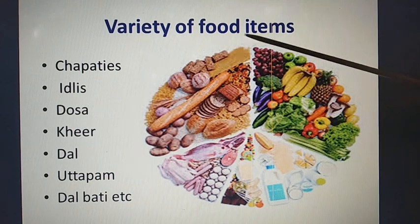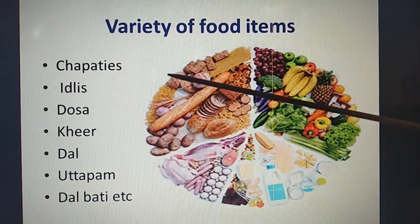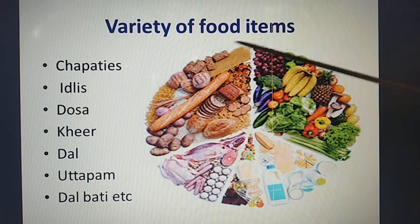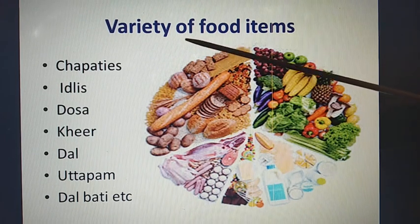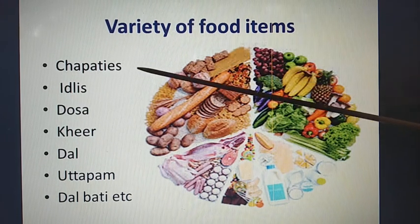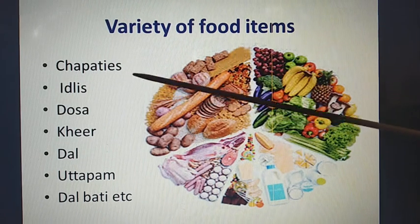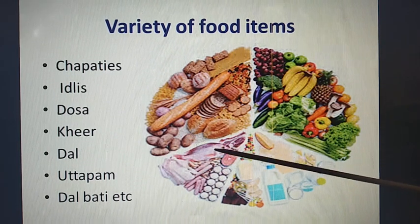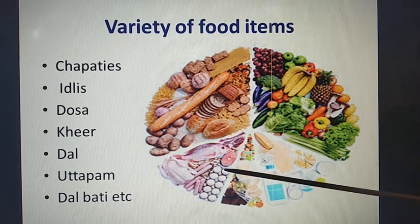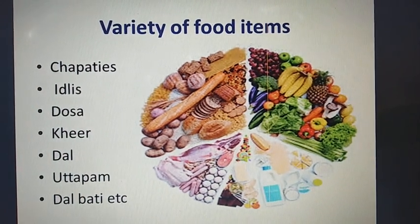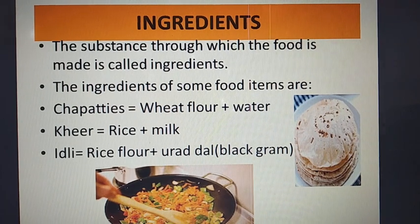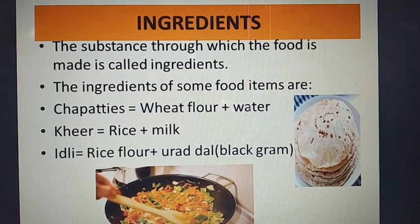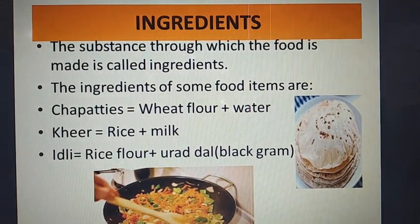Next is the variety of food items. When we go for dinner or lunch, we can see so many items on our plate — chapatis, pulses, idli, dosa, kheer, dal, uttapam, dal bati, and different types of food items. In India, as there are different regions and different cultures, the food items are of different types. It also depends on the availability of the food item.